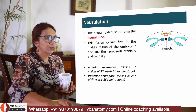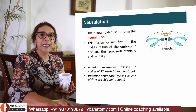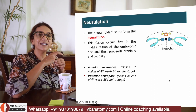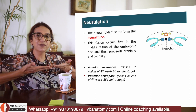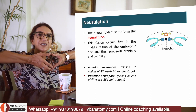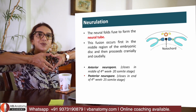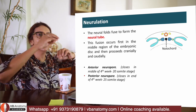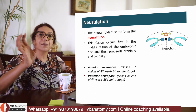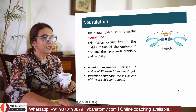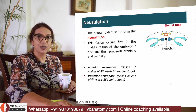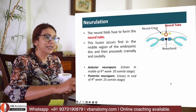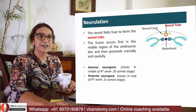You can see that the two edges of the neural plate have now fused together to form a neural tube, and the two neural crest cells have separated out. In the center you can see the neural tube, and on the dorsolateral side you can see the neural crest.